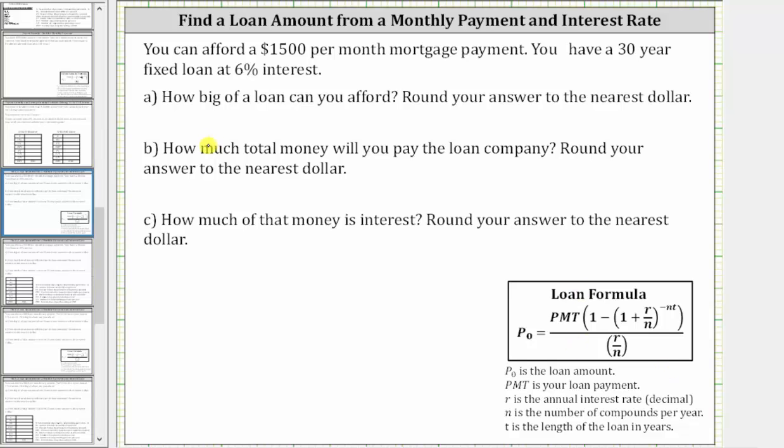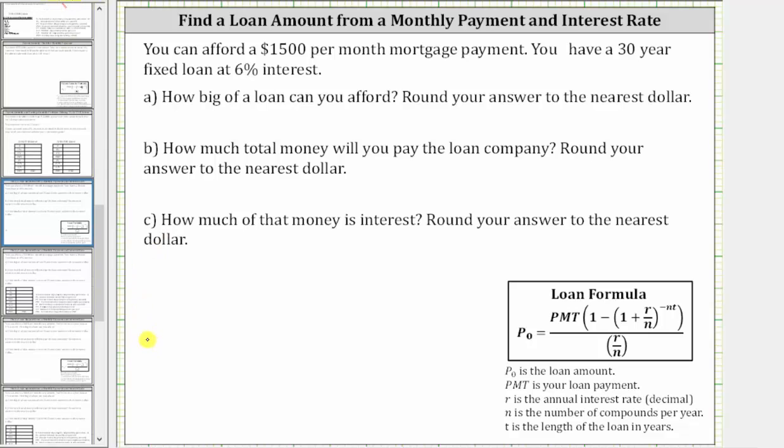Because the question is how big of a loan you can afford, we are trying to determine P₀, which gives us the equation P₀ equals a quotient where in the numerator we have PMT (which in our case is $1,500) times the quantity one minus, in parentheses, the quantity one plus r divided by n, raised to the power of negative n times t.